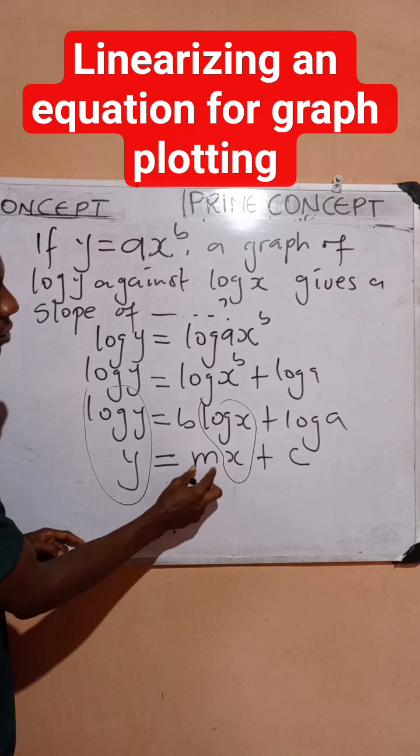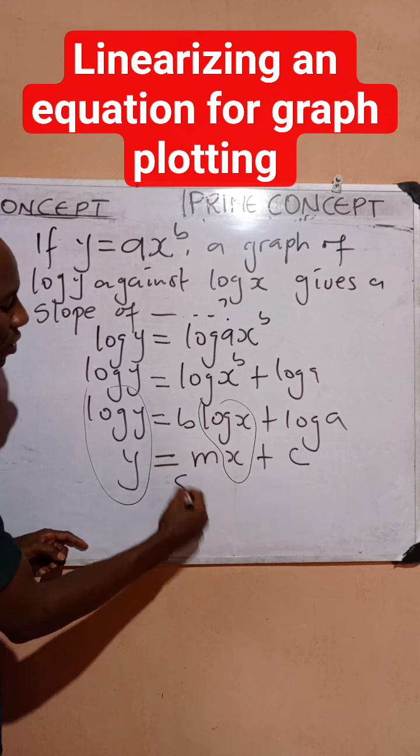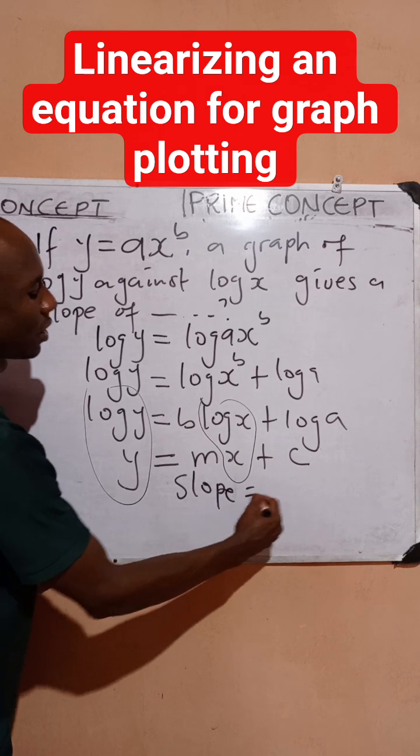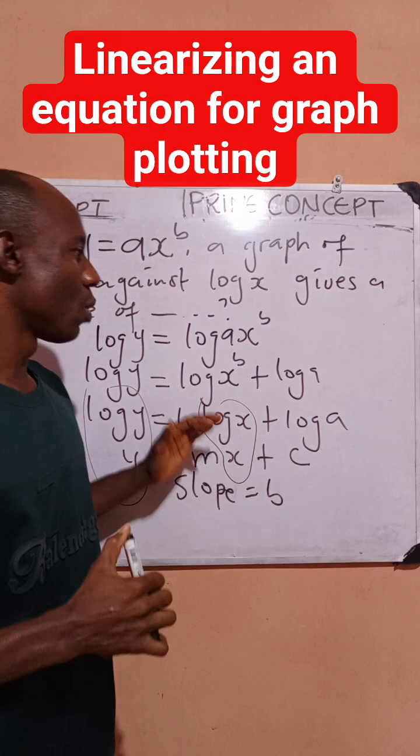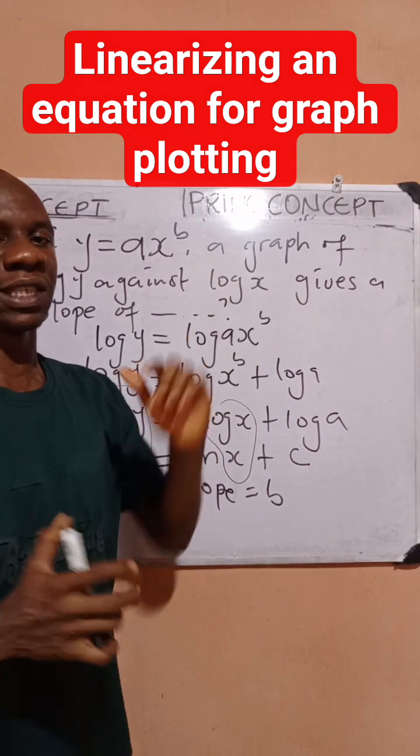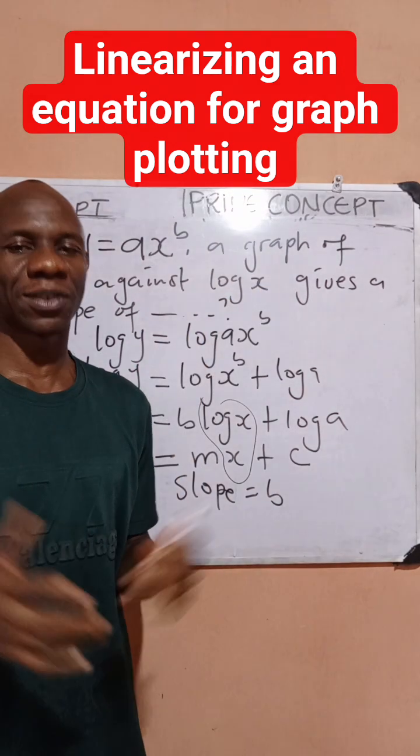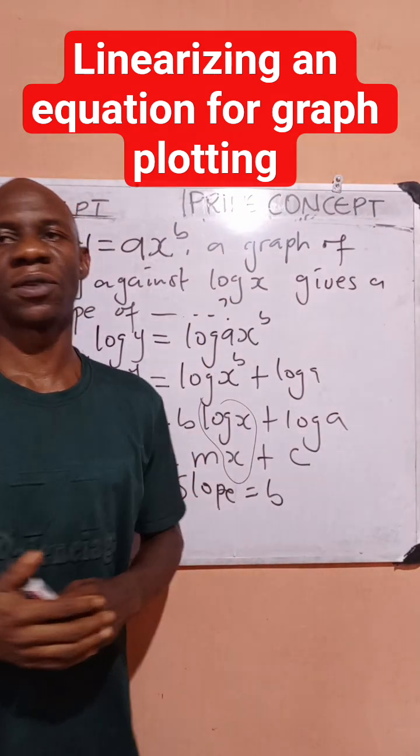...means that the slope for the graph is going to be b. So the slope equals b. I believe the concept is clear. If you understand what we've done, what will the intercept be? Drop the answer in the comment section. Thanks for watching Brain Concept.